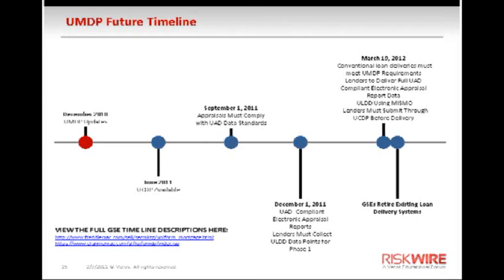Which takes us into the next slide, which is another timeline. As you remember the last timeline covering the last three to four years, this is looking over the next year or so and what the requirements will be for UMDP. The first bullet point: the UMDP updates were provided by the GSEs in December of 2010.